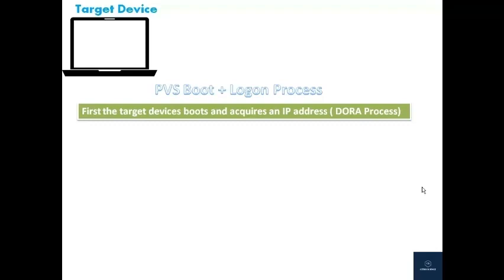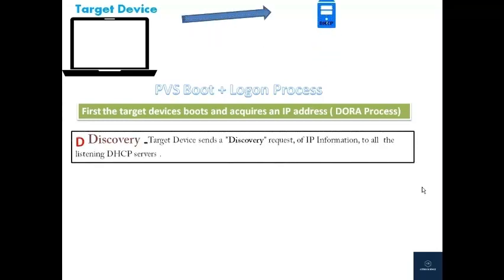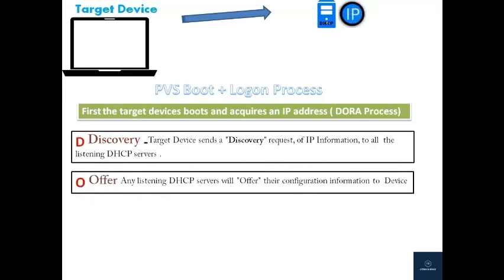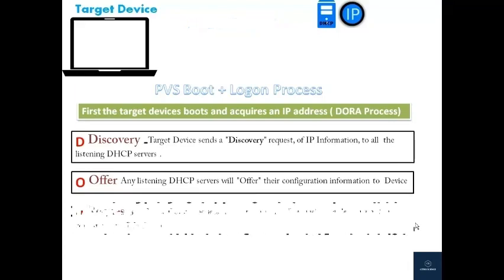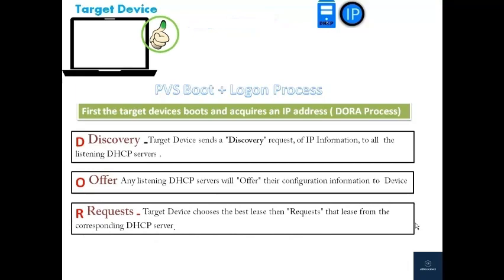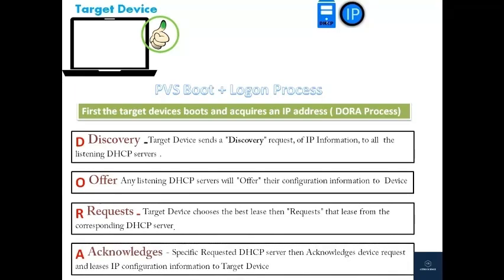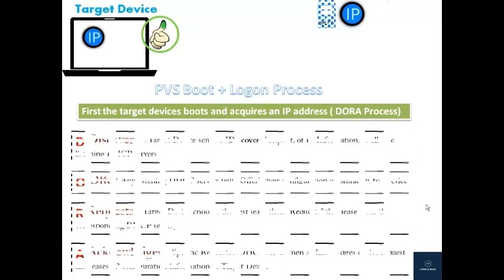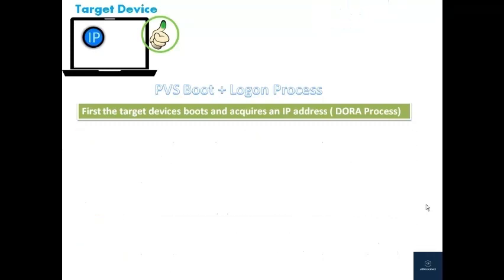In the DORA process: Step 1 — the target device sends a discovery request for IP information to all listening DHCP servers. Step 2 — any listening DHCP servers offer their configuration information to the target device. Step 3 — the target device chooses the best lease and requests it from the corresponding DHCP server. Step 4 — the specific DHCP server acknowledges the request and leases the IP configuration information to the target device. The DORA process is now complete and the target device has full IP configuration information.